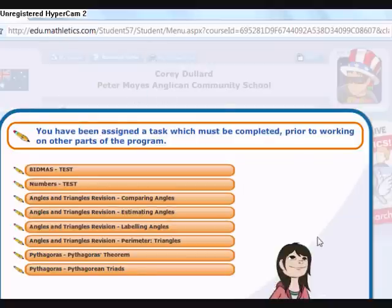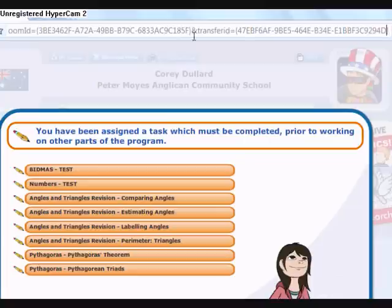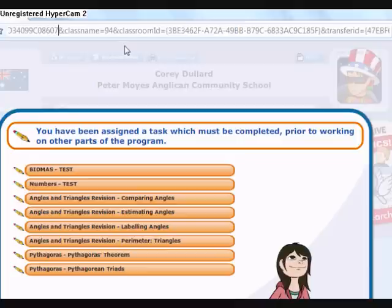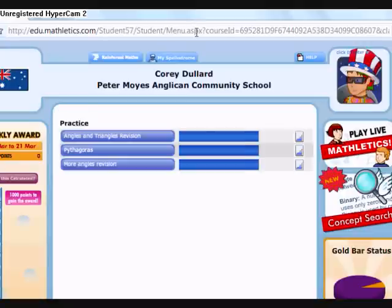Alright, as you can see, I've got tasks. And if you go to the top, to the URL bar again, and you look along until you find classroom ID. And then in brackets, it should have 3BE30 something, alright? Change that 30 number to whatever you want, and then your tasks should be gone.